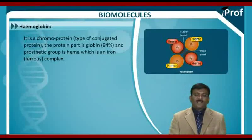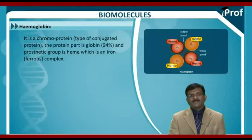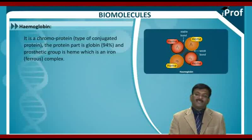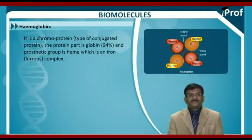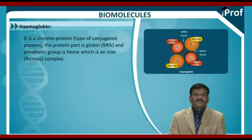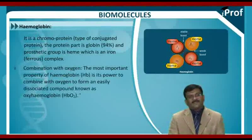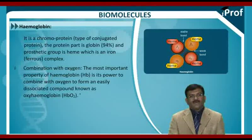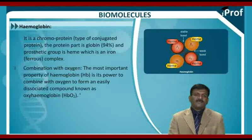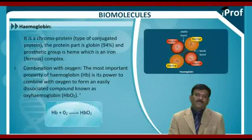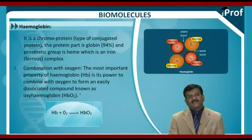It is a chromoprotein type of conjugated protein. The protein part is globin, which is 94%, and the prosthetic group is heme, which is an iron ferrous complex. The most important property of hemoglobin is its power to combine with oxygen to form an easily dissociated compound known as oxyhemoglobin, that is HbO2. The reaction is: Hb + O2 (reversible) gives HbO2.